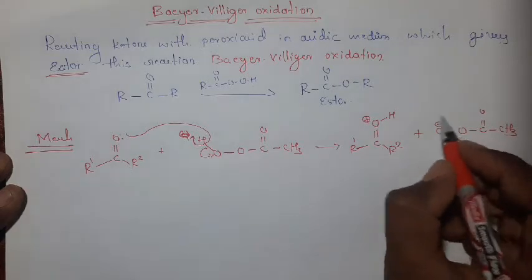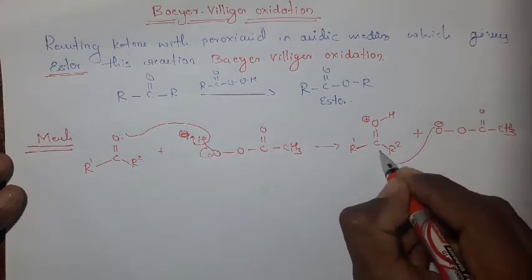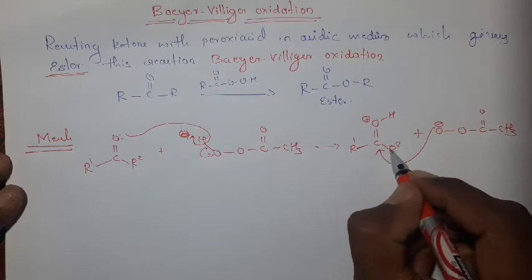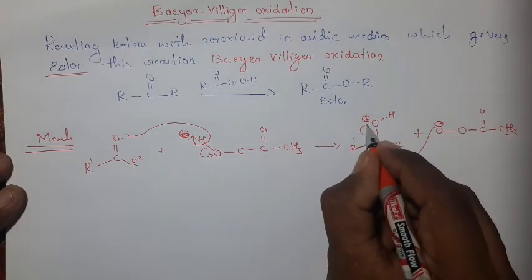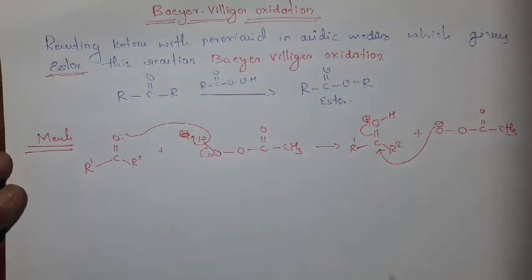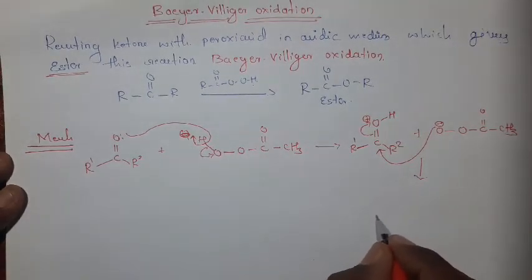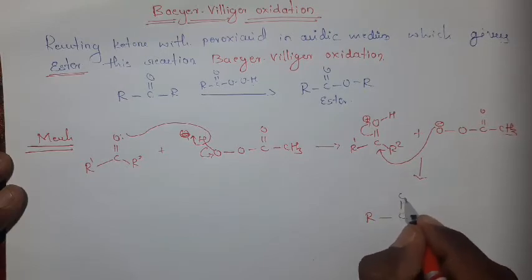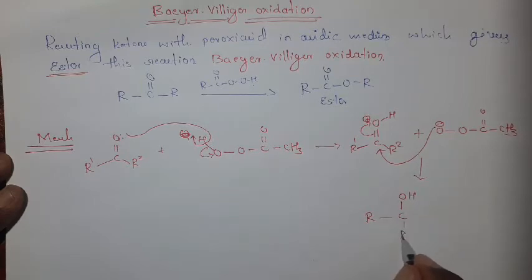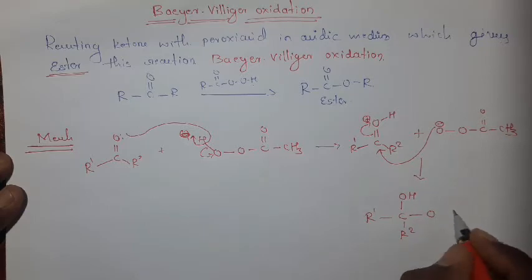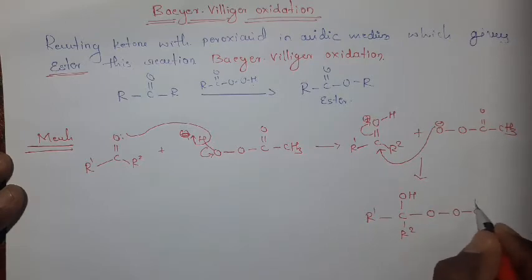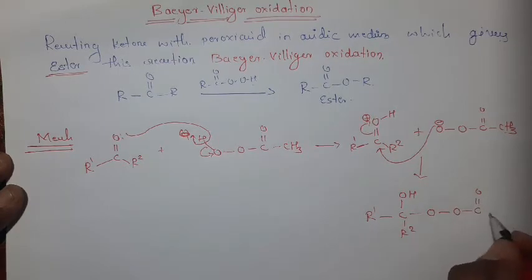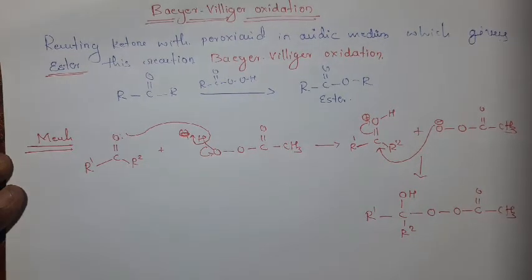Next, this negatively charged oxygen attacks the carbonyl carbon, because this carbon has a positive charge at that time. These bonds are shifted to the oxygen, then it becomes R–C with OH, this is R2, this is R1, and this carbon-oxygen bond becomes a single bond, then O–C=O of the acyl group.